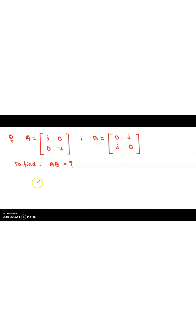Hi everyone, welcome back to my channel. Today we are going to understand how to multiply two matrices. Here you can see I have taken two matrices: Matrix A which has the entries I, 0, 0, -I and Matrix B which has the entries 0, I, I, 0.